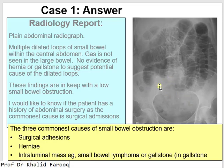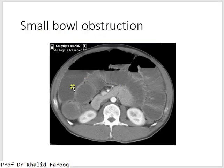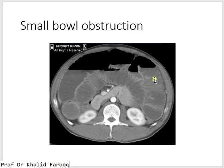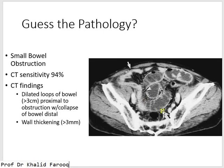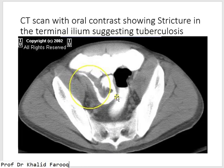On CT examination of the abdomen, both kidneys show normal uptake of contrast. This is a contrast-filled aorta, superior mesenteric artery and vein. We can see dilated small gut with complete mucosal folds and air-fluid levels suggesting small intestinal obstruction. Another example shows the exact cause: a stricture in the terminal ileum caused by tuberculosis, with the proximal portion of the small gut dilated — clearly identifying the etiology.